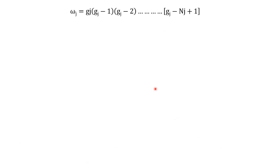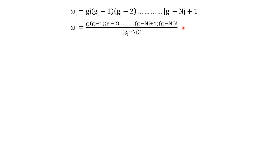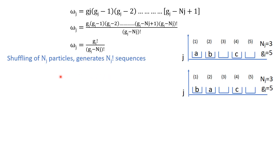Now I can simplify this — I divide by (gj minus nj) factorial and multiply by (gj minus nj) factorial. If you look at the numerator, this is equal to gj factorial. So the formula is: Ωj equals gj factorial divided by (gj minus nj) factorial.